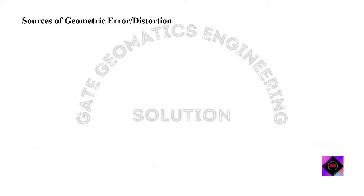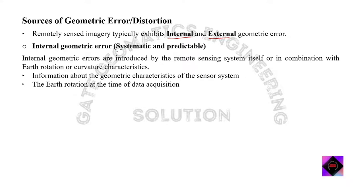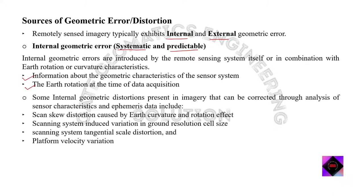There are different sources of geometric error or distortion. Remotely sensed imagery typically exhibits internal and external geometric errors. It is important to recognize the source of these errors and to identify whether they are systematic (predictable) or non-systematic (random). Internal geometric error is systematic and predictable. It is introduced by the remote sensing system itself, or in combination with earth rotation or curvature characteristics. These distortions are often systematic and may be corrected using information about the geometric characteristics of the sensor system and earth rotation at the time of data acquisition.